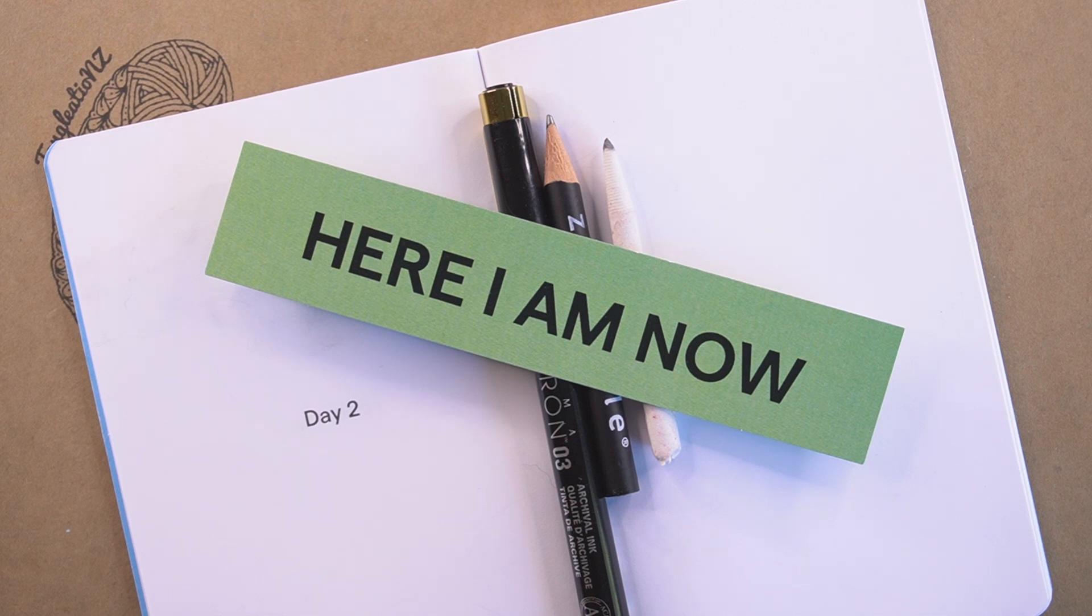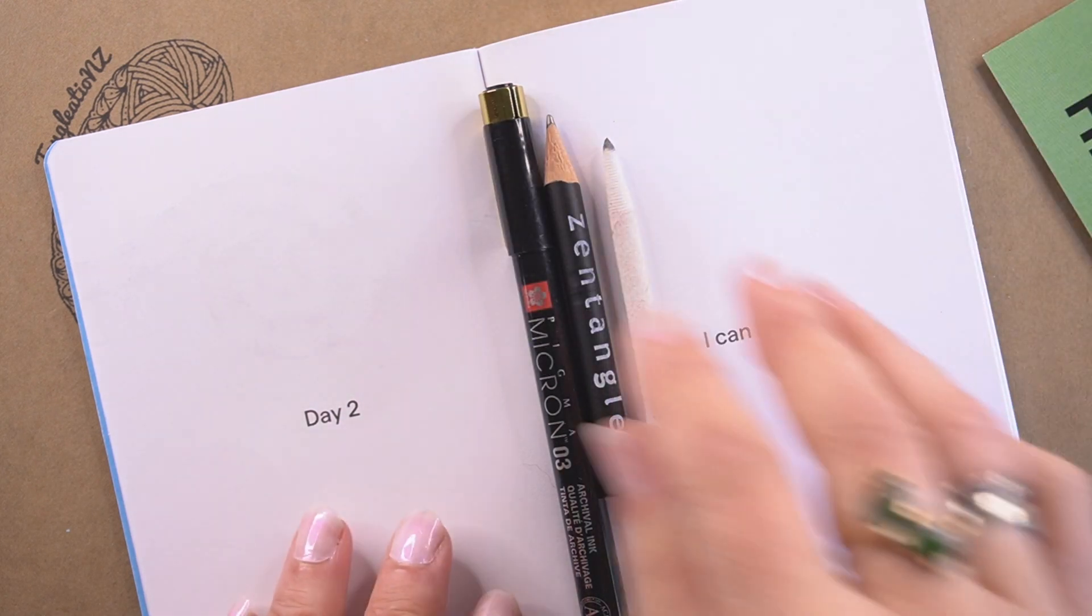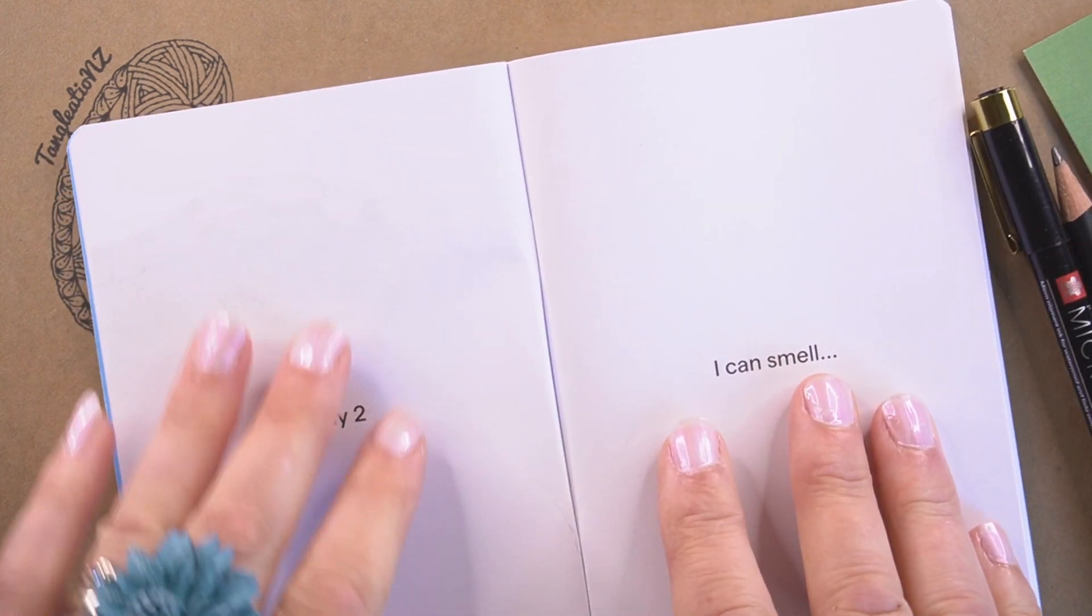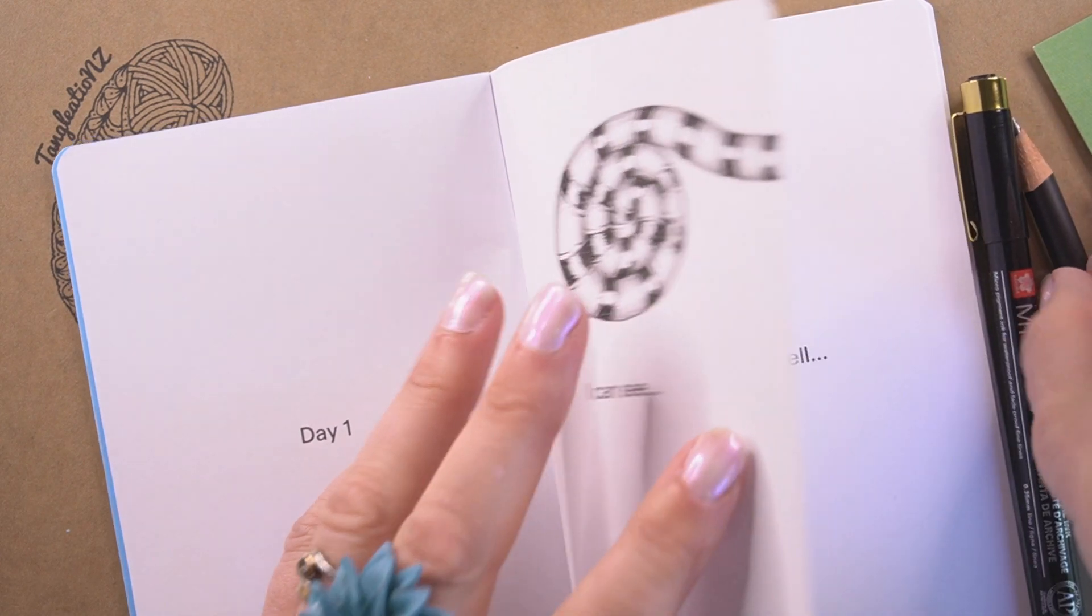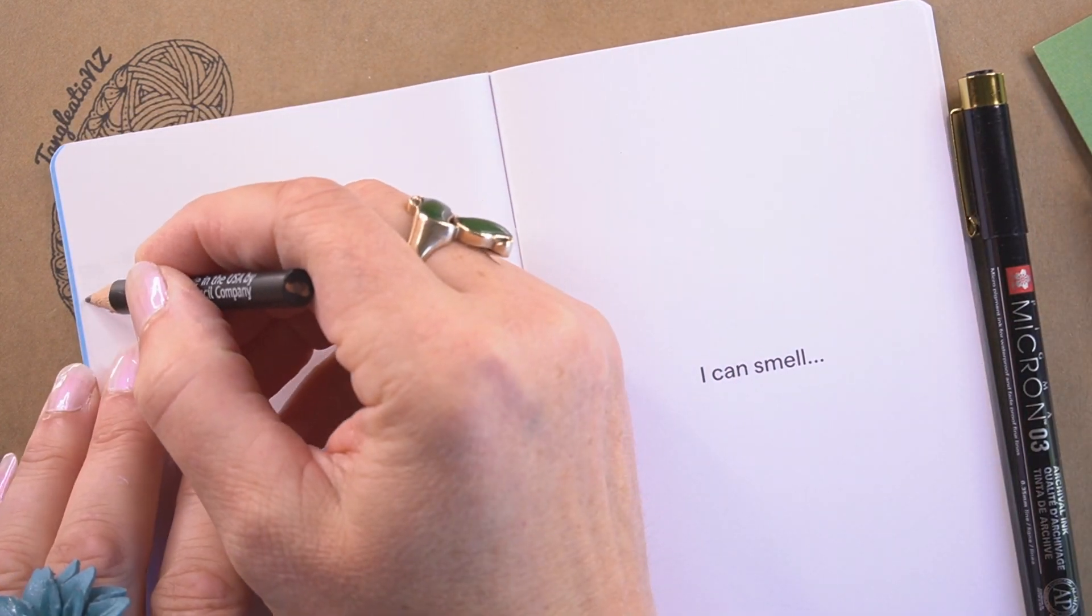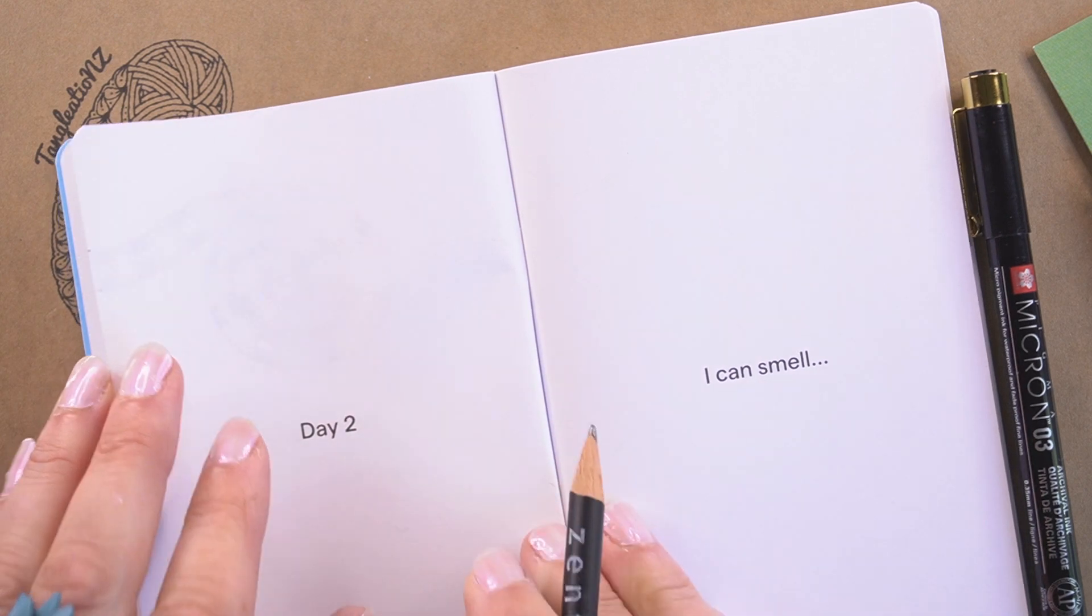Kia ora and welcome to day two of month done, a month of mindful moments with wrangling. Yesterday we did marasu and it has left us with a couple of string lines just where the edge of the marasu goes over. I'm just going to transpose those two points on the side of the page.